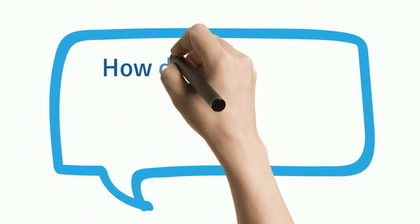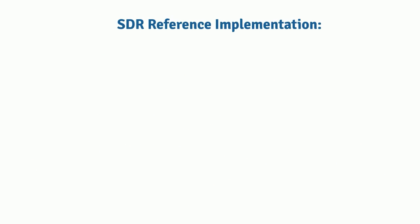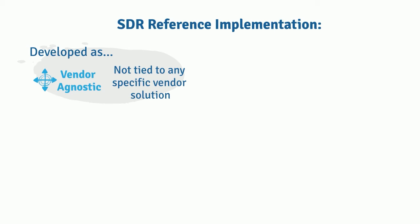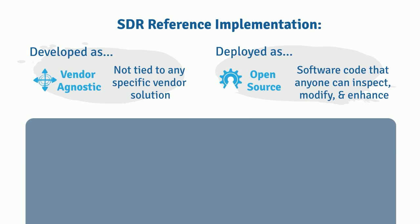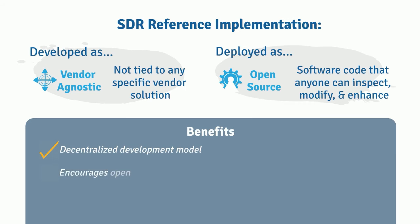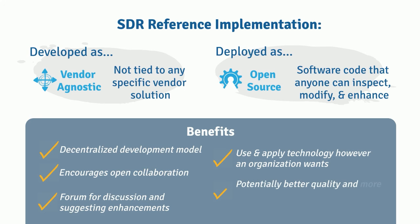How do I access the SDR reference implementation? The SDRRI was developed as both vendor agnostic — not tied to a specific vendor — and open source software that anyone can see, modify, and enhance. Benefits of these include a decentralized development model, encourages collaboration, a forum for discussing and suggesting enhancements, using and applying technology how an organization wants, and potentially better quality and security technology through community reviews.